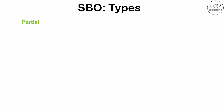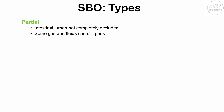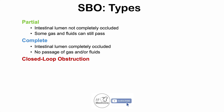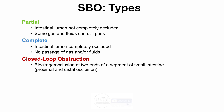There are particular types of small bowel obstruction. A partial obstruction is when the intestinal lumen is not completely occluded — some gas and fluids can still pass by. A complete obstruction is when the intestinal lumen is completely occluded, with no passage of gas or fluids. A closed loop obstruction involves a blockage at two ends of a segment — there's a proximal and distal occlusion with gas trapped in between.